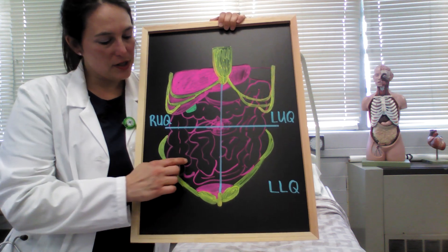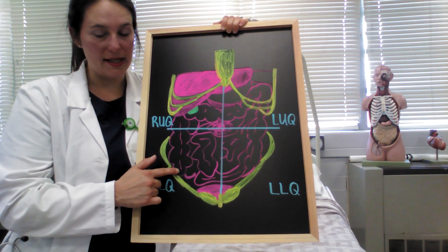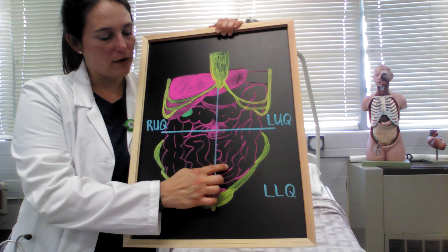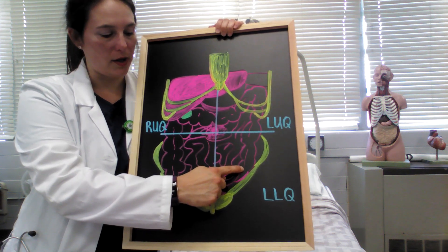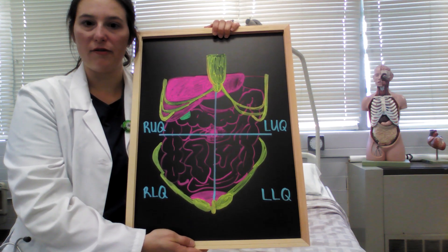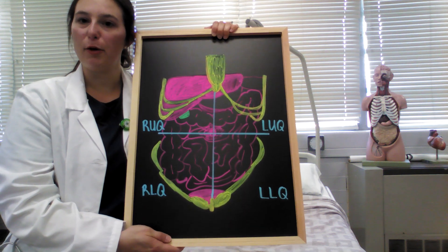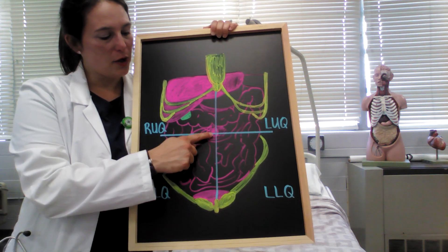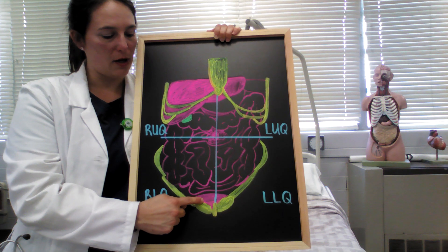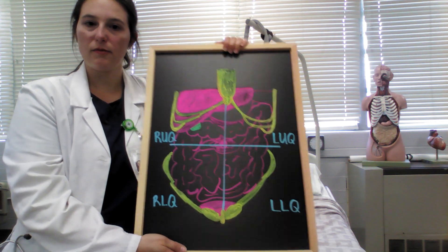In your right lower quadrant you're going to have the rest of your intestines, your ascending colon, your cecum, and your appendix. In your left lower quadrant you're going to have more of your intestines, your descending colon, and in a female you can also find your left fallopian tube, left ovary, and left ureter. The right lower quadrant is where you would find your right ovary, right fallopian tube, and right ureter. Midline you may be able to palpate your bladder if it's distended, the uterus if it's enlarged, and your aorta.